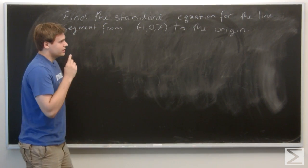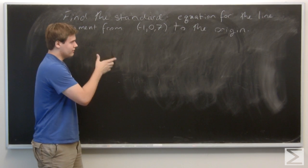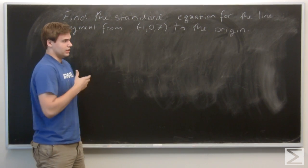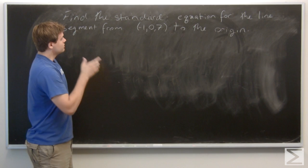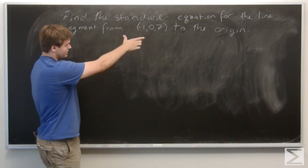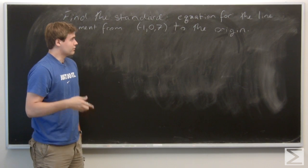So recall that the definition—all the information we need for a line is a point on the line and a vector parallel to the direction of the line. So we know that it contains the point (-1, 0, 7).